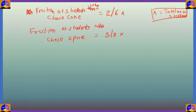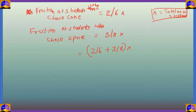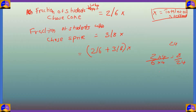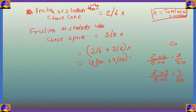To find the fraction of students who chose either Coke or Sprite, we add 2/6 and 3/8. To add these fractions, we find the LCM of 6 and 8, which is 24. So 2/6 = 8/24 and 3/8 = 9/24. Adding these gives 8/24 + 9/24 = 17/24.